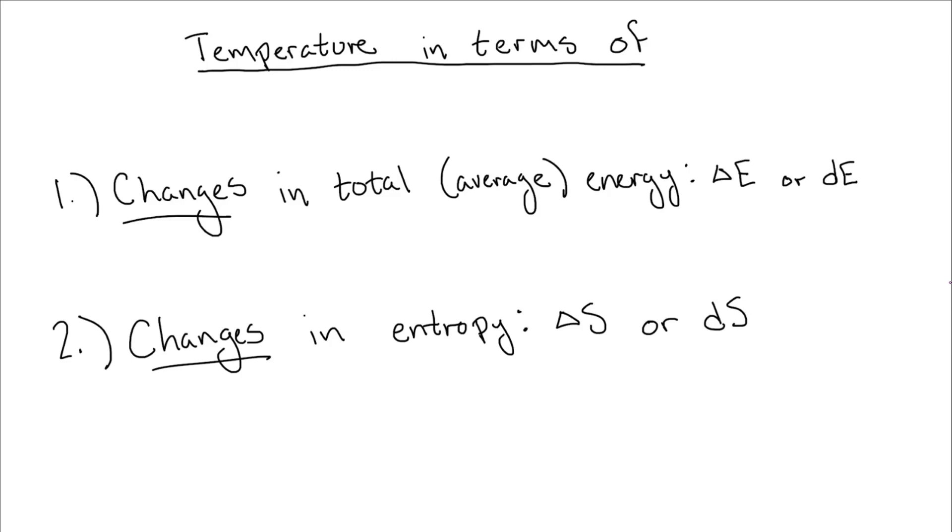Okay, so we want to try to find a relationship between temperature, the change in entropy, and the change in average total energy. The easiest thing to consider is how entropy changes if we change the energy by a small amount at different temperatures. To do this, let's just consider a single particle of a classical gas.